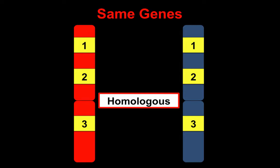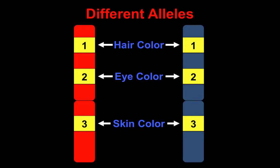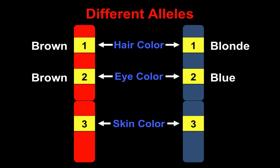On your homologous chromosomes, you have the same genes — for example, hair color, eye color, and skin color on a particular pair. However, you can have different alleles. The version of the gene your dad gave you is not necessarily the same as the one your mom gave you. So your mom might give you brown hair, while your dad gives you blonde hair. How those alleles interact is going to determine how your trait ends up being expressed.